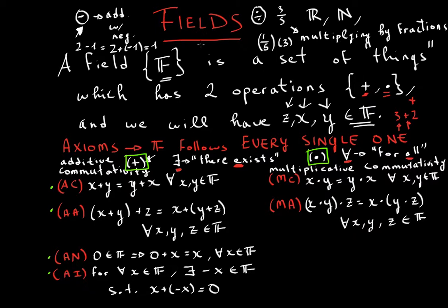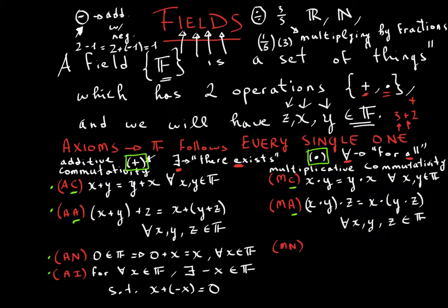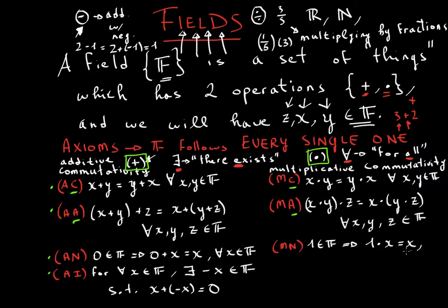Everything we are talking about is basically a description of how elements work in fields. If you notice, these are just parallels of each other — you're just mirroring: commutativity, associativity. You can almost guess the next one: multiplicative neutral. One is an element of the field, which implies that if you take one and multiply it by any element x, you will still have that element x, for all x in the field.